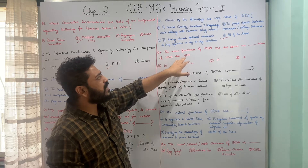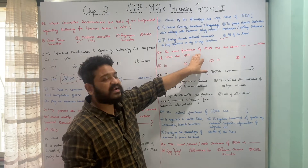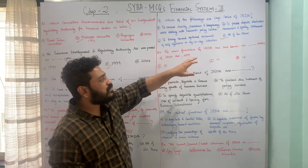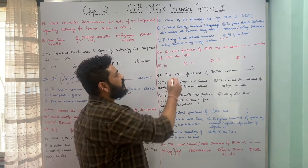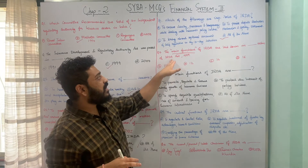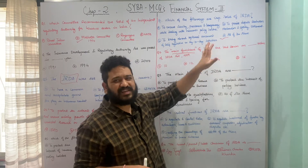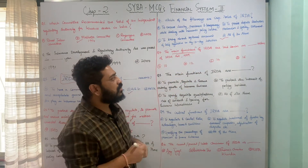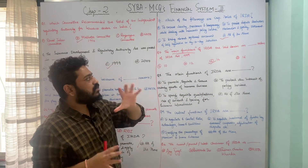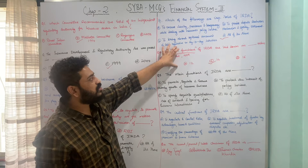The main functions of IRDA are laid down in which section of the IRDA Act 1999? The options are Section 10, Section 12, Section 14, or Section 16. The correct answer is Option C — Section 14 of the IRDA Act 1999 talks about the main functions of Insurance Regulatory and Development Authority of India.